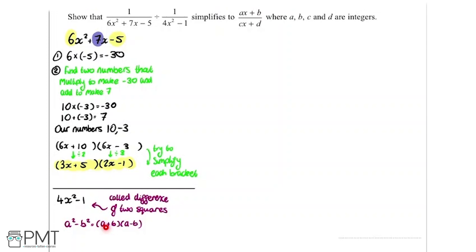its factorized form is a plus b, a minus b. And we have that here. This is actually an example of a difference of two squares. And I'll show you how.